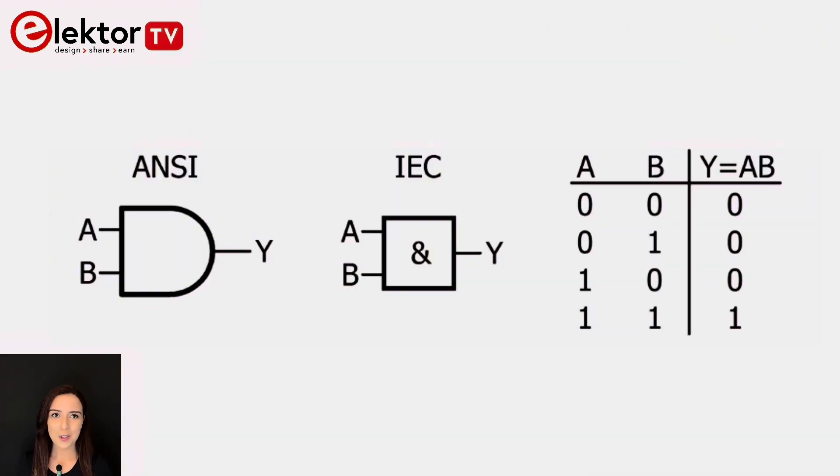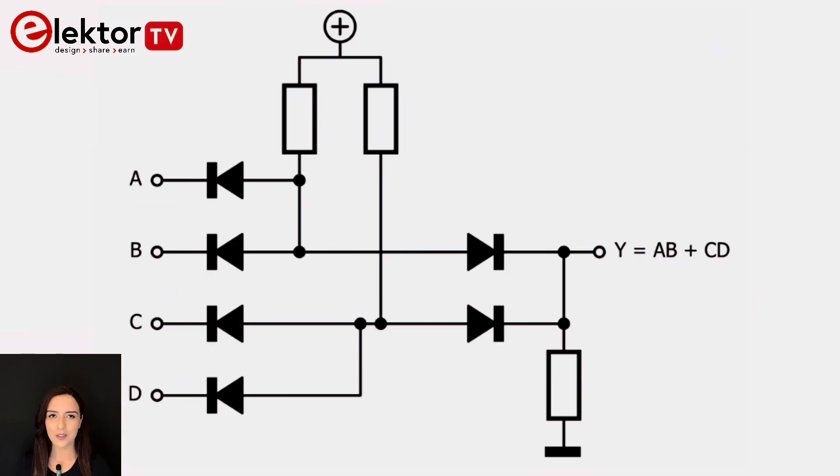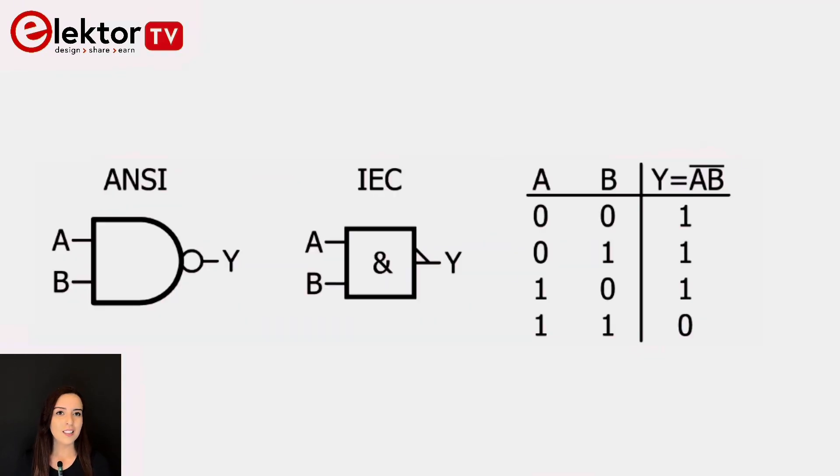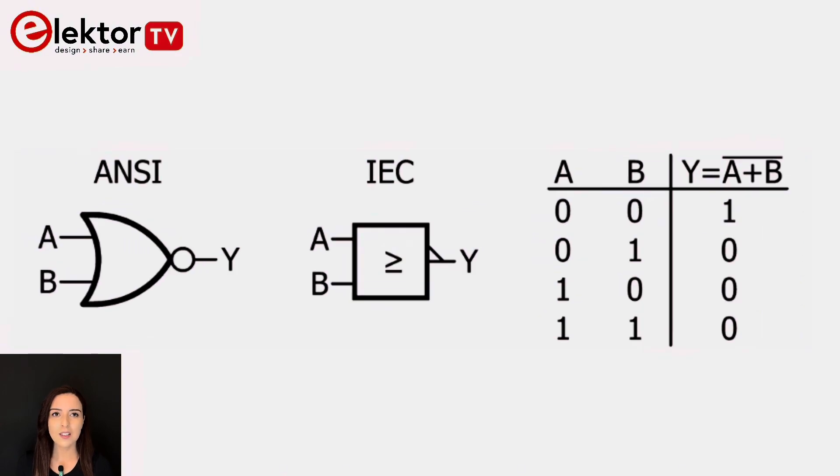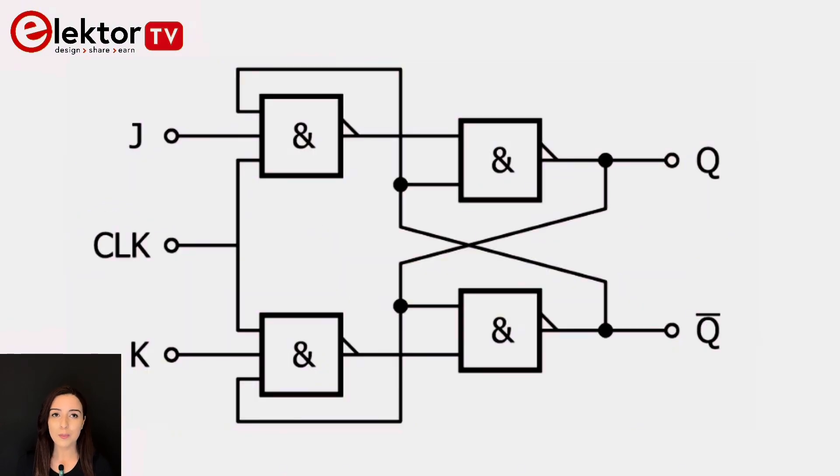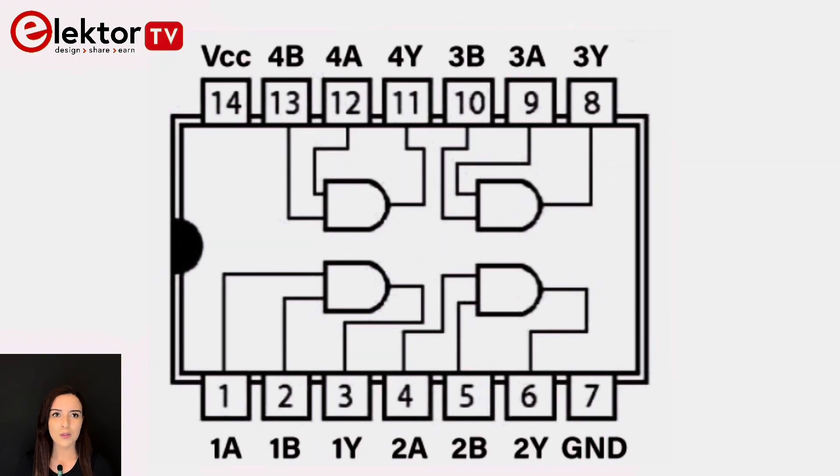In chapter seven, logic gates, you will explore the building blocks of digital systems. Understanding AND, OR, NOT and other gates is key to designing digital circuits. Logic gates perform Boolean algebra. This chapter covers the principles of various logic gates and how they can be used in simple projects.